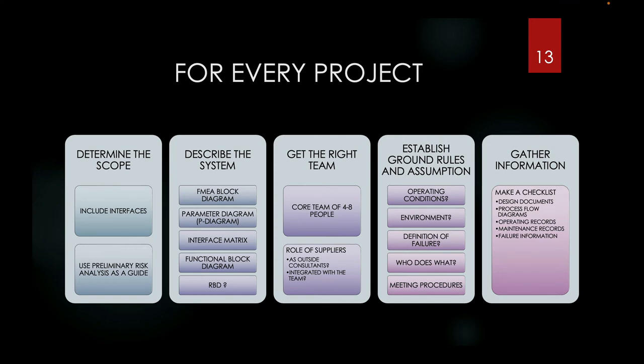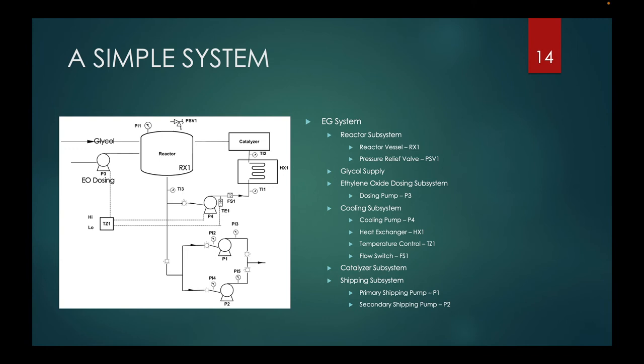Describing the system and its functions takes lots of effort. There are multiple diagrams that can help make sure everyone involved clearly understands the system being analyzed. We will use this ethylene oxide production system as an example. Keep in mind, this is a very simplified example.